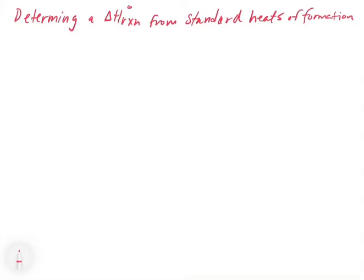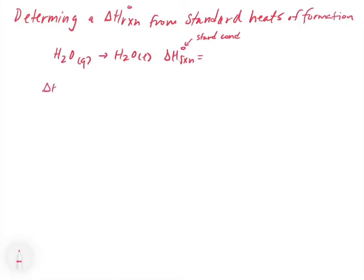Let's look at an example. We want to figure out the ΔH for H₂O(g) → H₂O(l) under standard conditions — the little naught symbol indicates standard conditions. To find the ΔH of reaction, we go into the table in Appendix C and look up the values for ΔHf of H₂O(g) and ΔHf of H₂O(l).